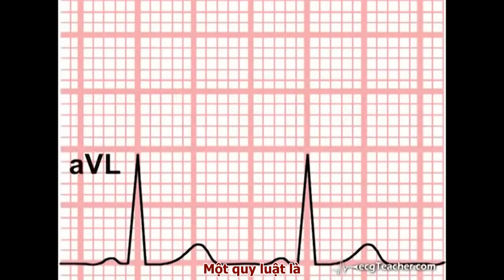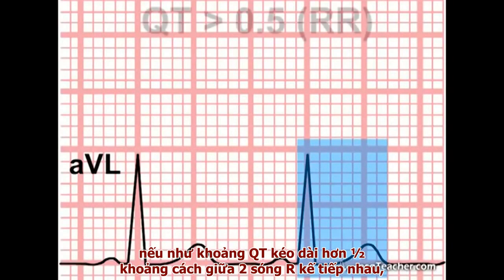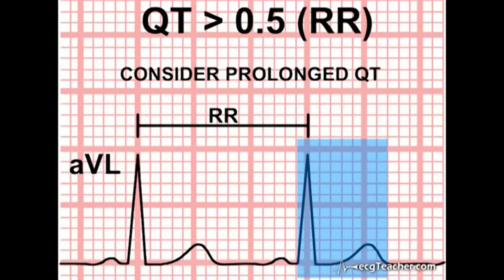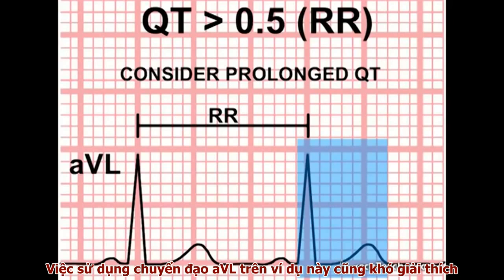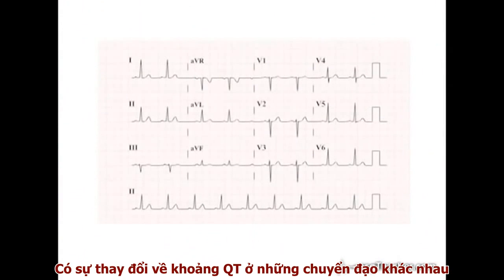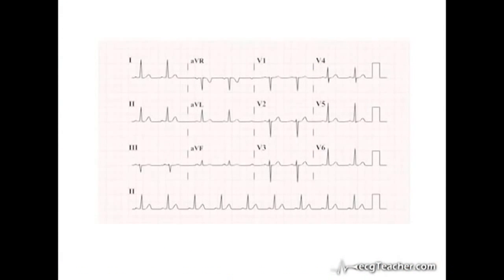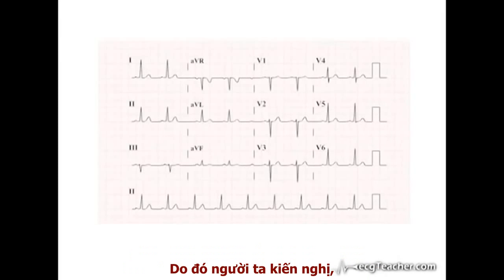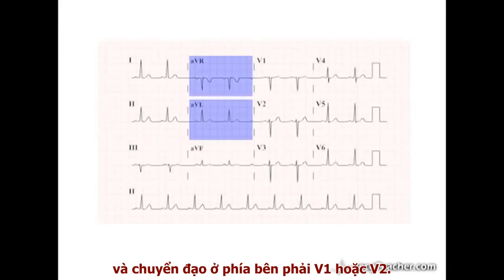As a simple rule of thumb, when you look at an ECG, if the observed QT interval is more than half the RR interval, at least consider the possibility of prolonged QT. The use of AVL in this example is quite deliberate. There is variation in the length of the QT interval between different leads, and it can be difficult to identify the end of the T wave in many leads. It is recommended that you analyse the QT interval in one of four leads: AVL, AVR, or one of the right-sided chest leads, V1 or V2.